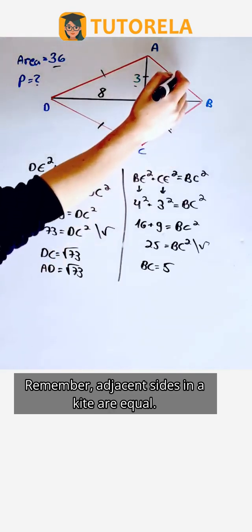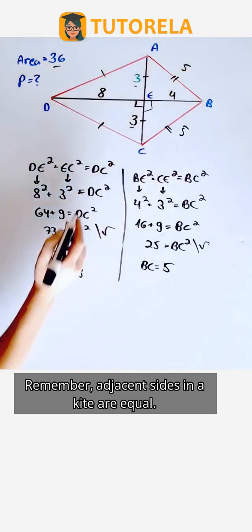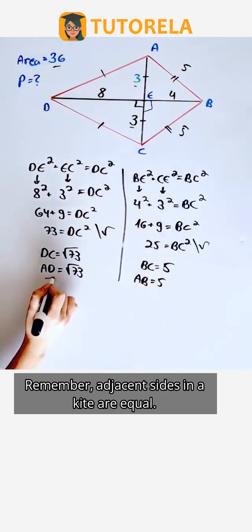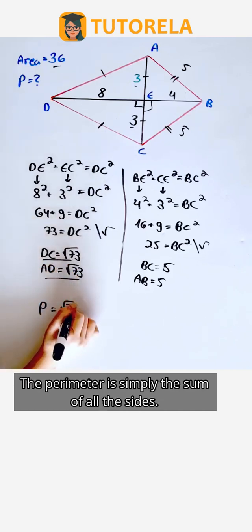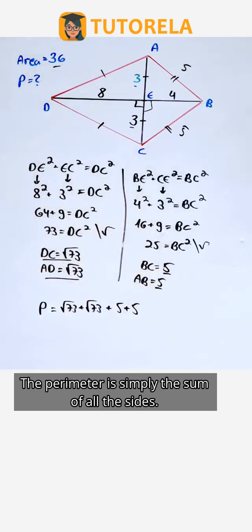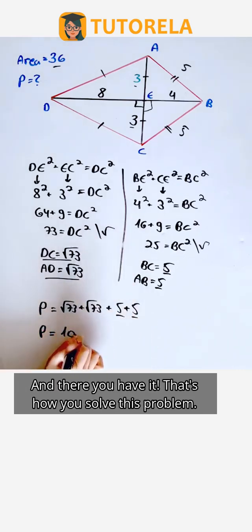Remember, adjacent sides in a kite are equal. The perimeter is simply the sum of all the sides. And there you have it. That's how you solve this problem.